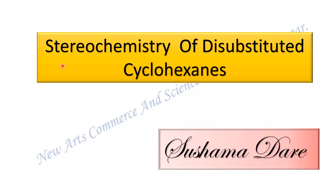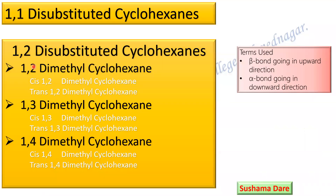Dear student, with respect to this topic, that is stereochemistry of disubstituted cyclohexane, I have already posted 5 videos. Now this is the last video regarding this topic. So up till now, what we have finished: 1,2-disubstituted cyclohexane, 1,3- and 1,4-disubstituted cyclohexane — among that, up to cis, we have already completed. Now in this video, I am going to talk about the trans-1,4-dimethylcyclohexane.